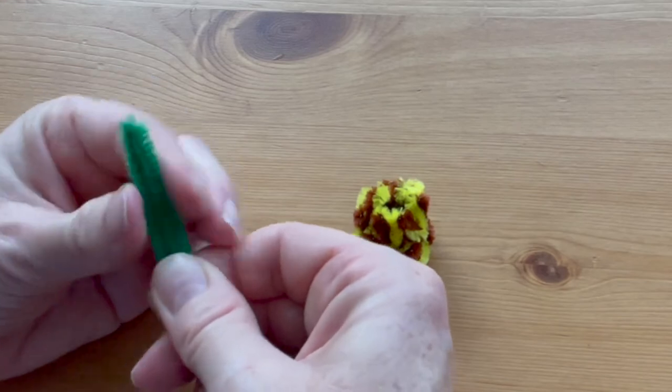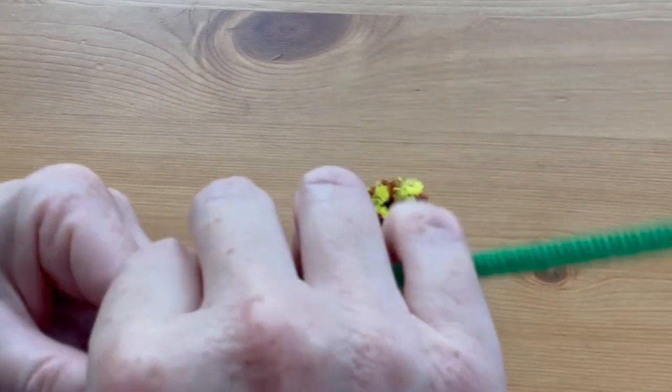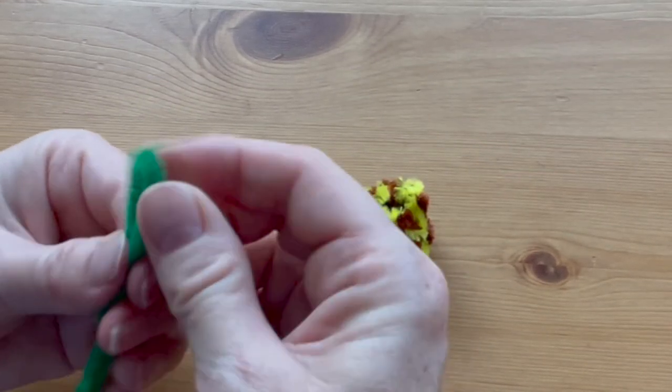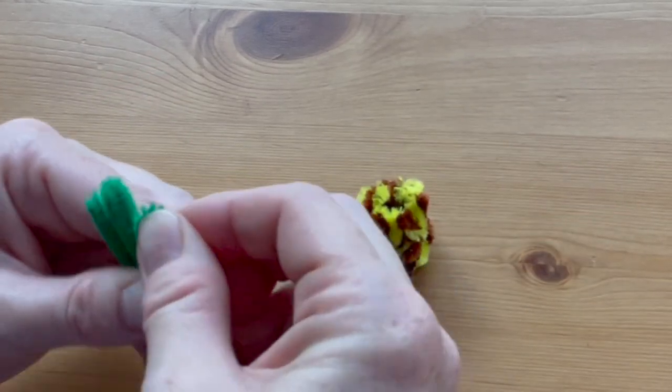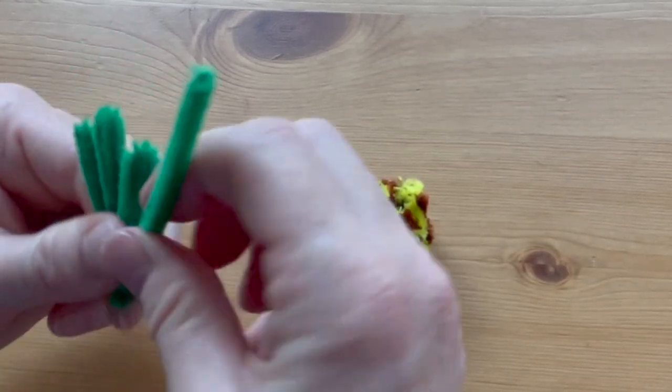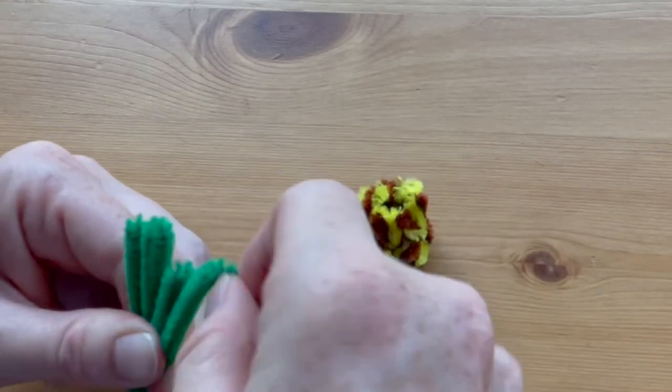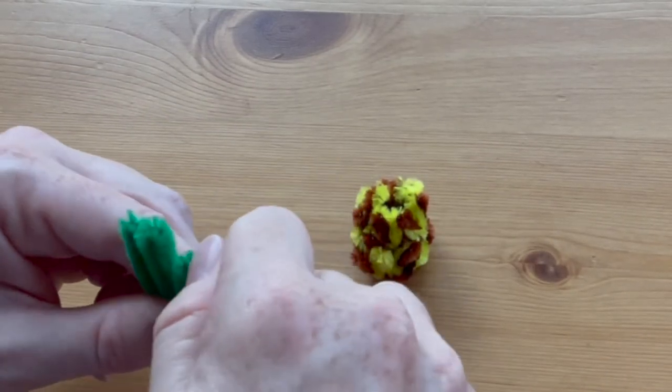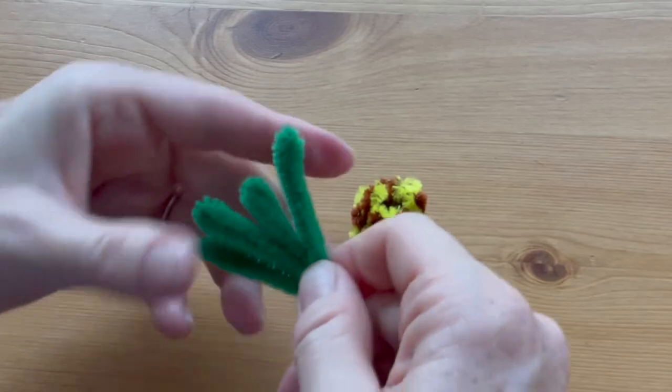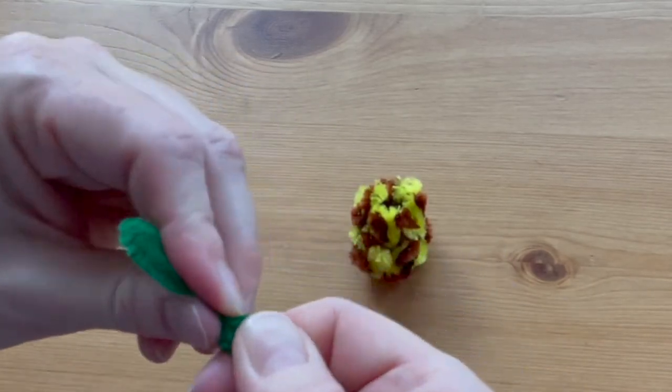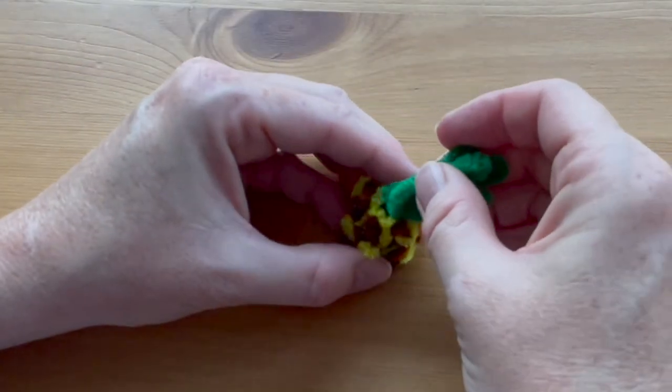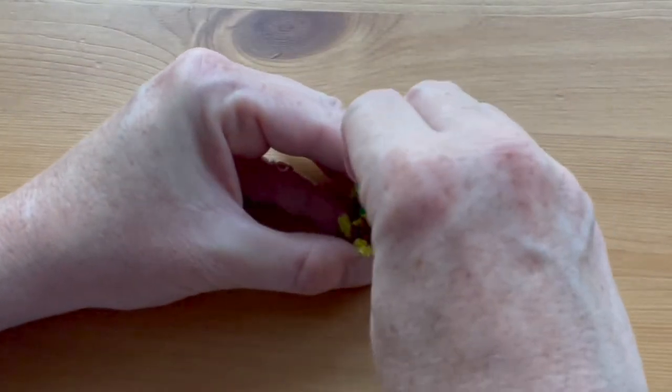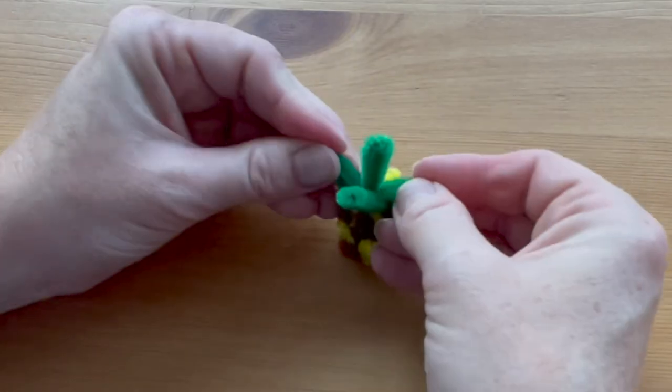Fold the green pipe cleaner into three or four leaves. You want to make them slightly different lengths. And then tuck the bottom into the center of the pineapple. You can twist the bottoms of the leaves a little so they go into the pineapple a little easier. Bend the leaves out a little and you're finished.